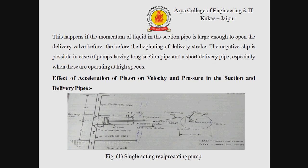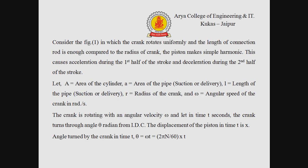Negative slip is possible in pumps having a long suction pipe and a short delivery pipe, especially when operating at high speeds. Now we discuss the effect of acceleration of the piston on velocity and pressure in the suction and delivery pipe. The figure shows a single acting reciprocating pump. Consider figure 1 in which the crank rotates uniformly and the connecting rod is long compared to the crank radius, so the piston makes simple harmonic motion, causing acceleration during the first half of the stroke and deceleration during the second half.